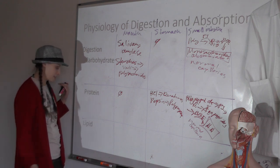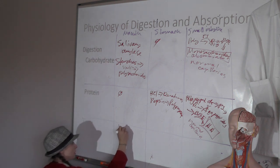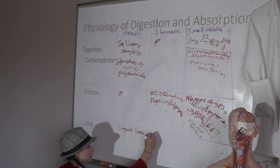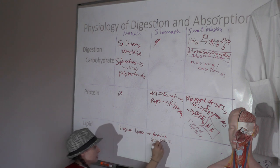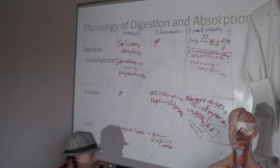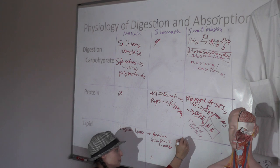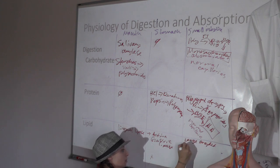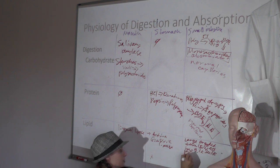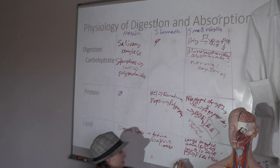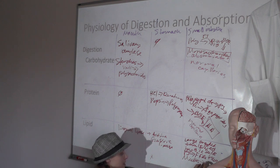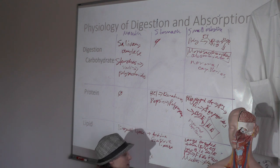For lipid digestion: in the mouth we added lingual lipase but it wasn't active until the stomach, which also added gastric lipase, though digestion is pretty insignificant there. Significant lipid digestion begins in the small intestine where a large fat droplet gets emulsified by bile salts, allowing pancreatic juice to break it down into free fatty acids and glycerol. Those get packaged into micelles, absorbed through enterocytes, formed into chylomicrons, and absorbed into lacteals.